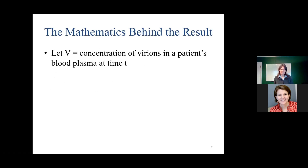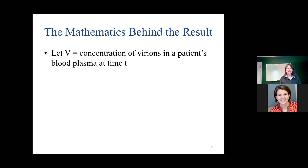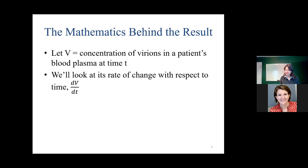Let's now look at the mathematics. I'm going to start with a mathematical model where V represents the concentration of virions in a patient's blood plasma at time T. V is the concentration of virus at time T. We're going to look at a rate of change of the virus with respect to time, because we're going to collect some patient data and look at how that virus level changes with respect to time. This quantity dV/dt has a mathematical name — what do you call it?